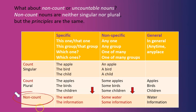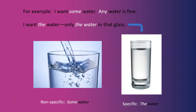What about non-count or uncountable nouns? They follow a similar pattern. Non-count nouns are neither singular nor plural, but the principles are the same. For specific, we say 'the water,' 'the information.' For non-specific, we say 'some water' or 'some information.' For example, 'I want some water' — any water is fine. 'I want the water' — that means only the water in that glass. So for non-specific non-count nouns, we use 'some,' and for specific non-count nouns, we use 'the.'